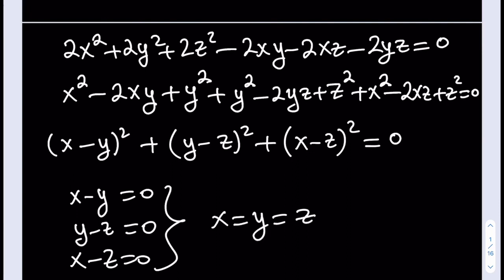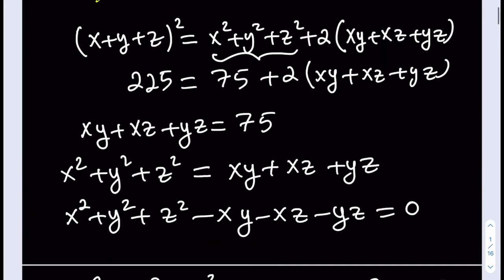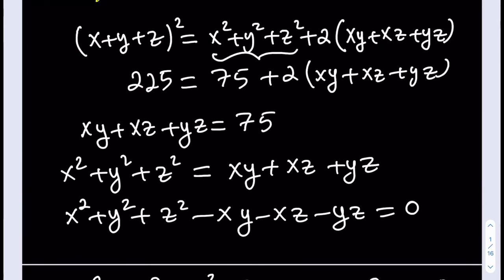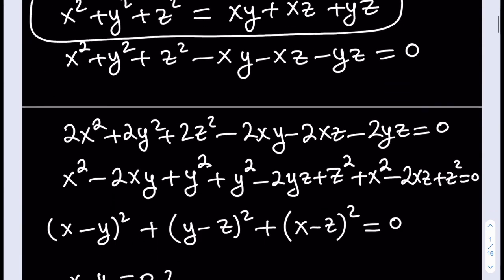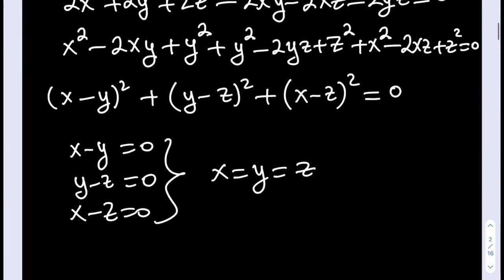So basically, kind of going backwards, this equation means that x, y, z all have to be equal to each other. Okay. Which is kind of cool. And we could prove that in different ways, of course.